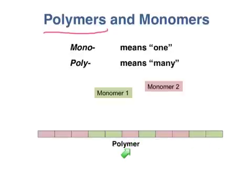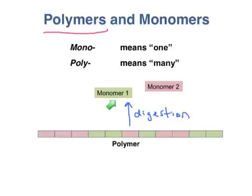When you digest these large polymers in food, your digestive enzymes break the polymers down into their constituent monomers. And it's the monomers that actually get absorbed into the bloodstream.